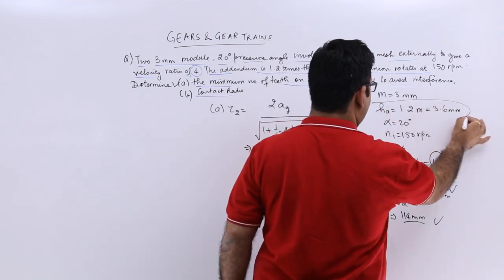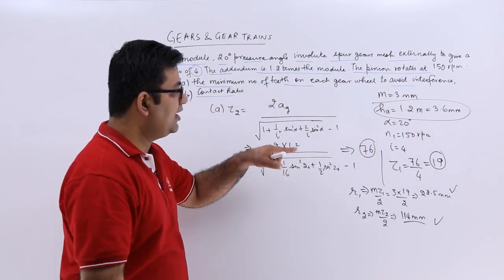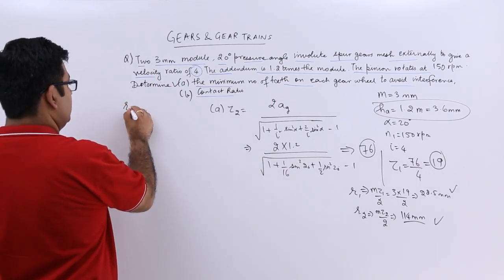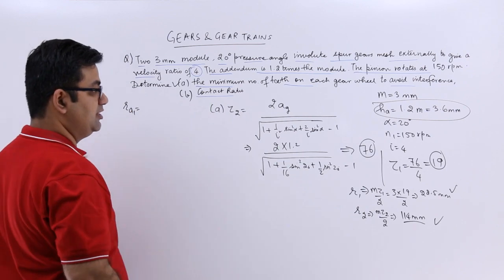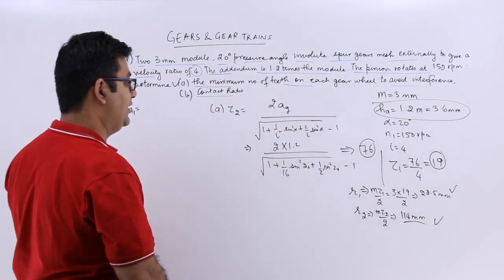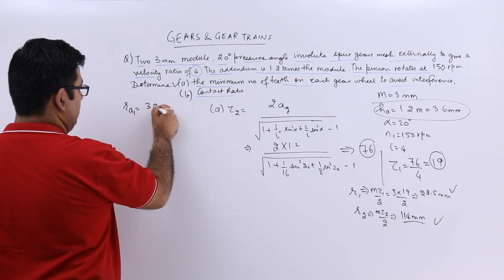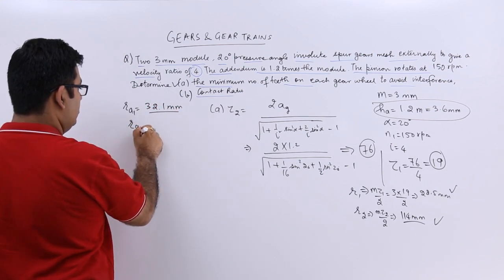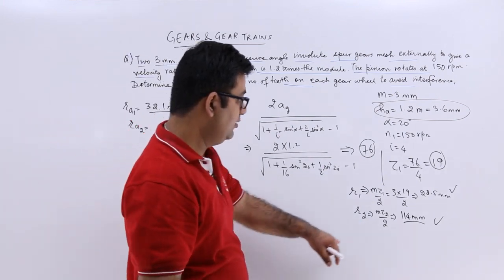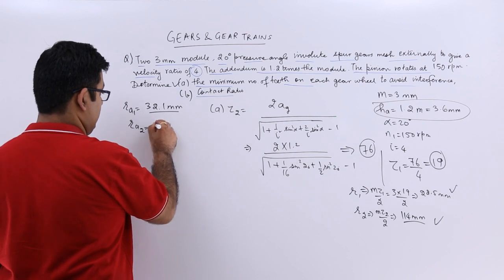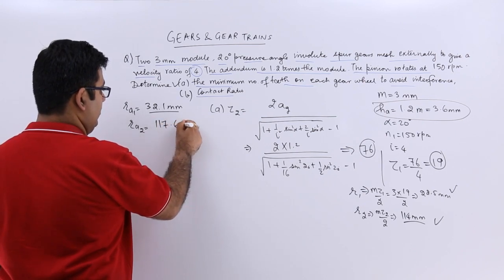You already have the addendum, so I can find out Ra1 and Ra2. Ra1 is 28.5 plus 3.6, that's 32.1, and Ra2 would be 114 plus 3.6, that's 117.6.